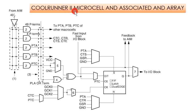Here we have the CoolRunner II microcell and the associated AND array. Box 1 represents the AND array, which is driven by signals from the AIM (Advanced Interconnection Matrix). Each of the 56 product terms (P terms) is generated by the AND array.